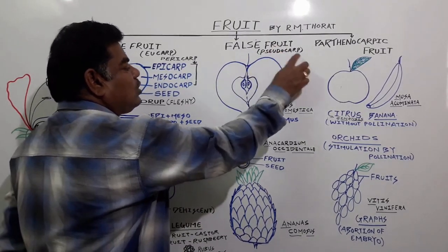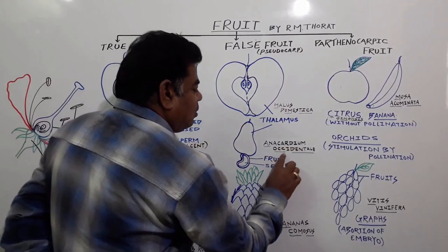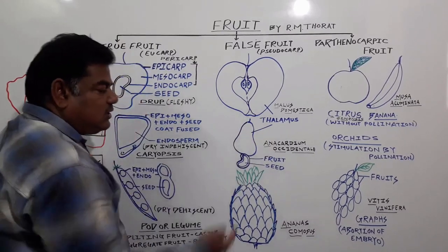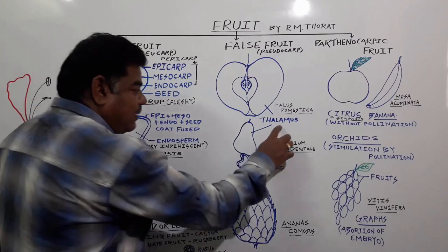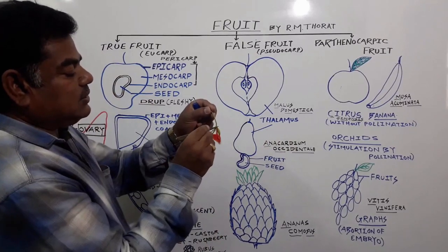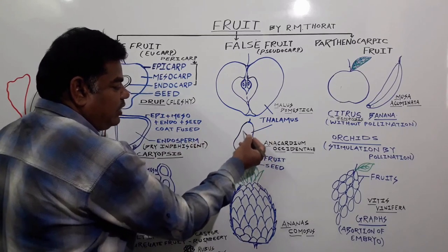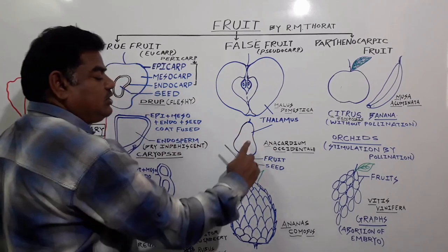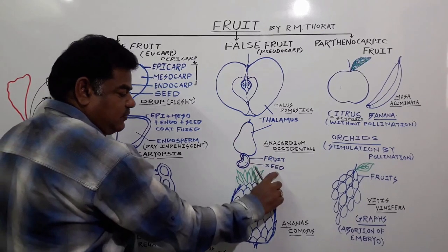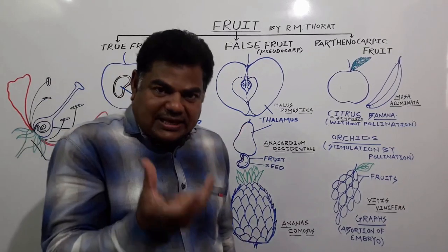Second example: in the case of Anacardium occidentale — kaju (cashew) — the thalamus takes part in the process of fruit formation. The thalamus gets modified into a fruit-like structure, but it is not the actual fruit. Inside this structure a seed — the cashew — is present. This structure is the thalamus modified into an apple-like structure.